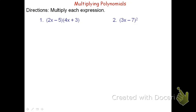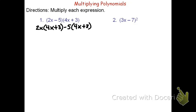For the first problem, I'm going to need to multiply 2x times the quantity 4x plus 3. I'll then need to multiply negative 5 times the quantity 4x plus 3. So let's begin by writing 2x times the quantity 4x plus 3, and then negative 5 times the quantity 4x plus 3. We'll then distribute.